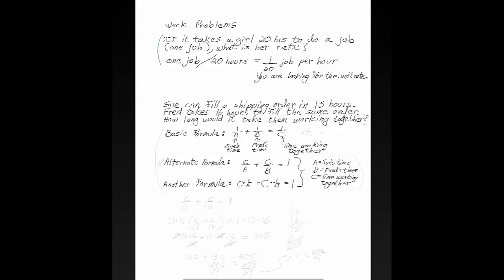Let's look up here. If it takes a girl 20 hours to do a job, that's one job, what is her rate? Well, her rate is one job per 20 hours. This is the same as one-twentieth of a job per hour. So her rate is one-twentieth of a job per hour. This is the unit rate. Remember doing unit rates in pre-algebra?